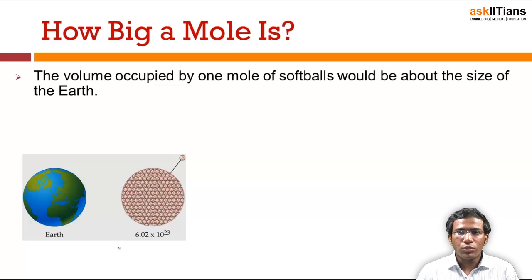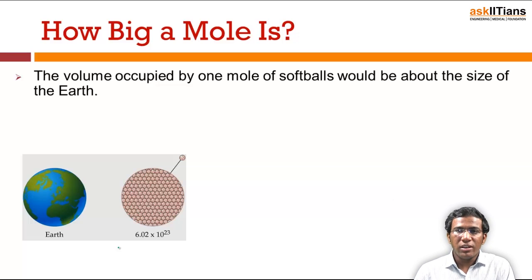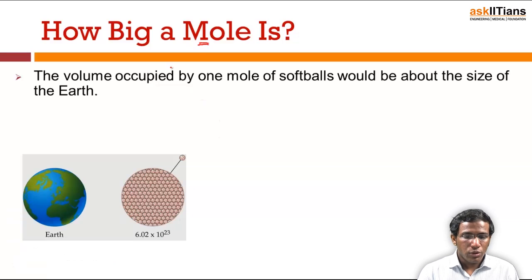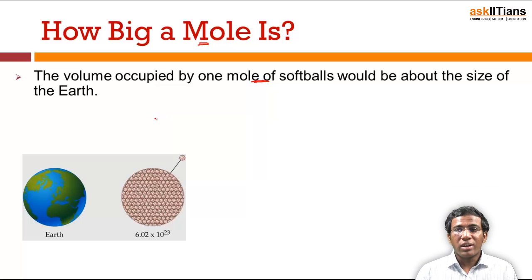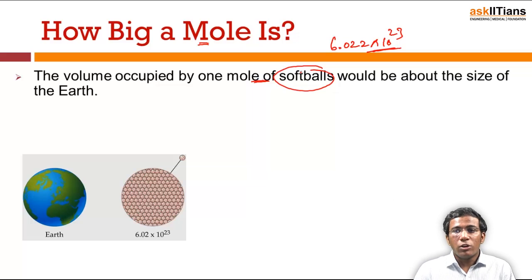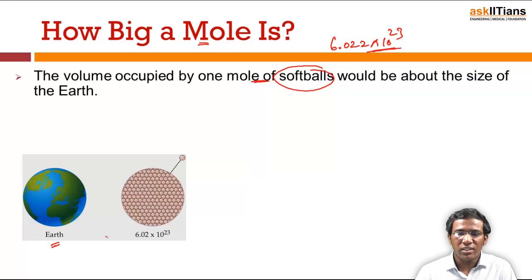Let's understand how huge one mole is. You know that 1 mole equals 6.022 × 10²³. The 10²³ is a very huge number — if you write 23 zeros you will understand how big that number is. Here is an example: the volume occupied by one mole of softballs would be about the size of the Earth. If you collect 6.022 × 10²³ softballs and measure their total volume, it would be approximately equal to the volume of the Earth.